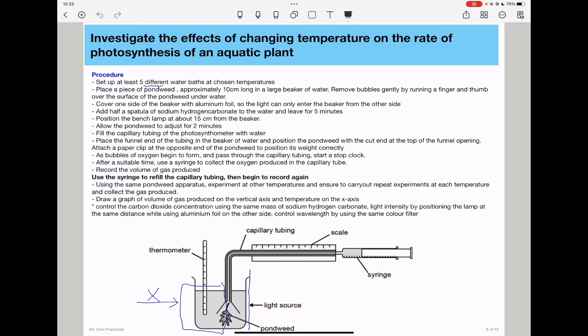Add half a spatula of sodium hydrogen carbonate to the water and leave for five minutes. The sodium hydrogen carbonate is going to provide carbon dioxide required for this experiment. Then position the bench lamp at about 15 centimeters from the beaker. Remember that the bench lamp provides the light source.